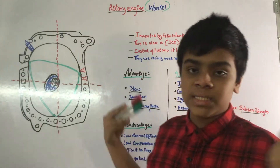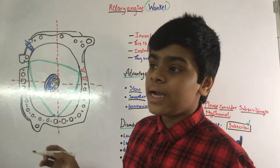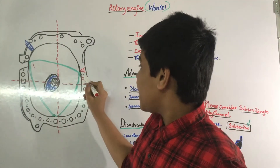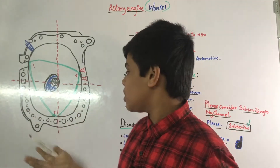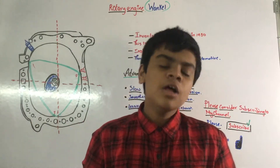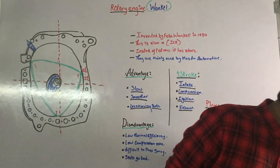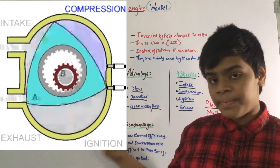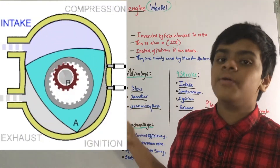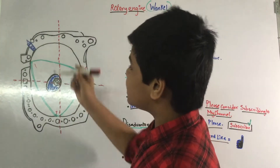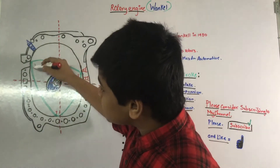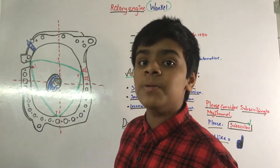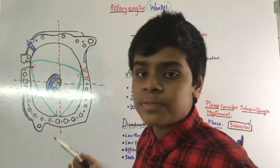A triangle has three sides, so I'll mark them one, two, and three. I'm showing a video of the rotor moving so you can see the intake process, then compression, then ignition, then exhaust. When side one reaches a certain point in the housing, the intake process begins.